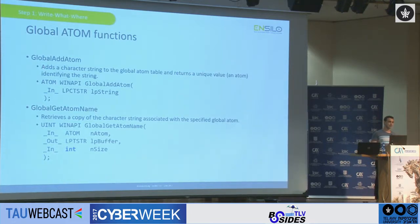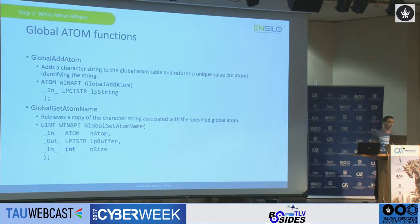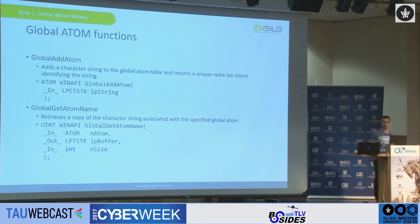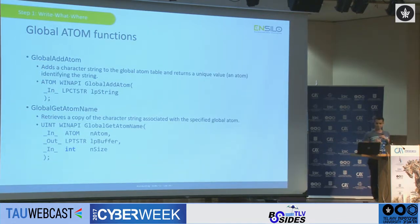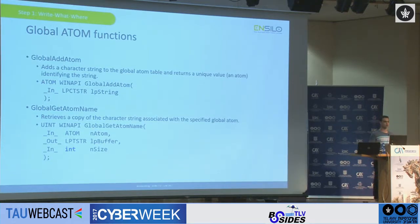The second function we're going to look at is GlobalGetAtomName, which is basically the inverse function of GlobalAddAtom. This function receives an atom, a pointer to a buffer, and the size — the size is just there to avoid any buffer overruns. What this call does is give me back my string and write it to wherever I want, because I can control the pointer being passed as the second parameter. In theory, if I could somehow call GlobalAddAtom to store some code in the global atom table, and then call GlobalGetAtomName while controlling all the parameters, that would give me my write-what-where — the ability to write whatever I want, wherever I want, within the address space of the target process.